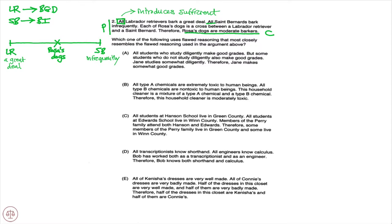Clearly a flawed argument. How can we say that just because Labrador Retrievers bark a great deal and St. Bernards bark infrequently, and Rosa's dogs are a cross, therefore they must be moderate barkers? That doesn't make any sense. The question stem asks: which one of the following uses flawed reasoning that most closely resembles the flawed reasoning used in the argument above? This is a flawed parallel reasoning question, so we're looking for an answer choice with the exact same flaw — taking two sufficient/necessary statements and combining the sufficient conditions to conclude we're in the middle of the necessary conditions.